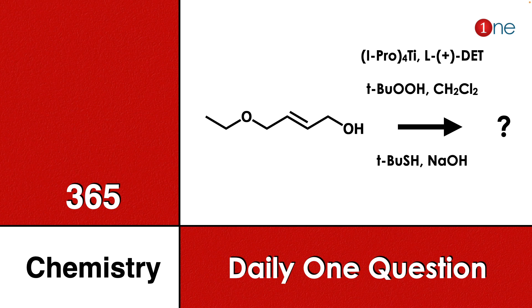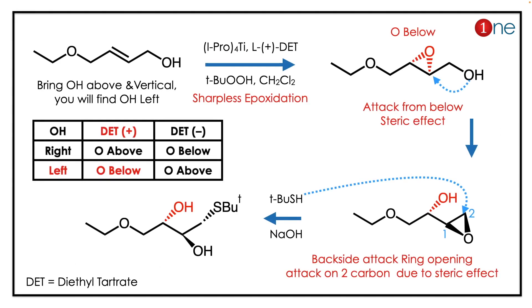You have to guess what the final product will be. By looking at the DET and titanium, you might realize it's a Sharpless epoxidation — an asymmetric epoxidation. The outcome will be decided by the position of the OH as well as the chirality of the DET. Here D-(-)-DET is present. You can identify which side the OH is on by bringing the double bond vertical.